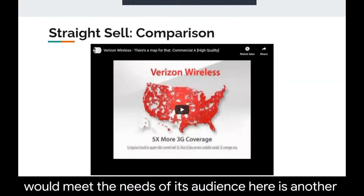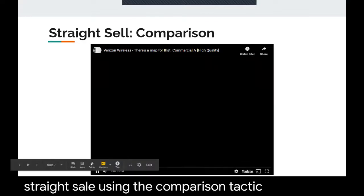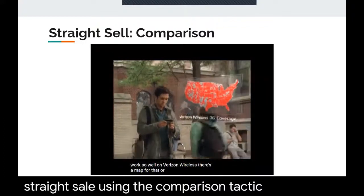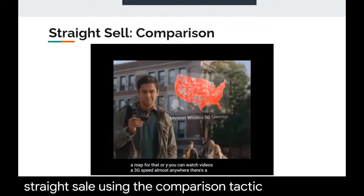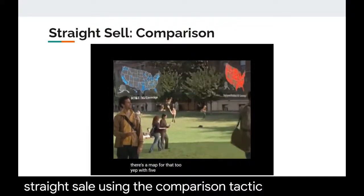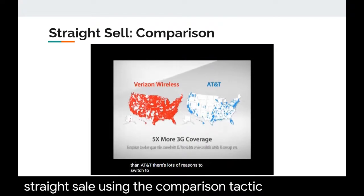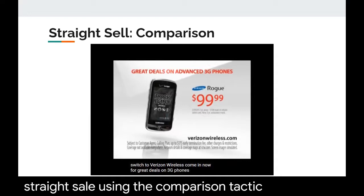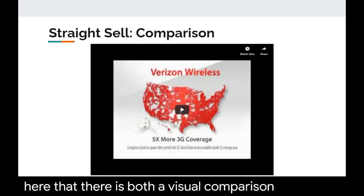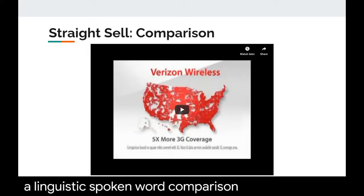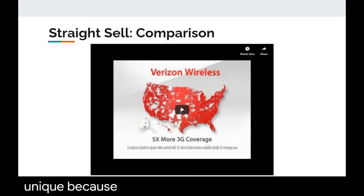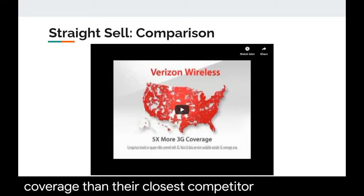Here is another straight sell using the comparison tactic — a Verizon commercial arguing that their service is unique because they have larger areas of 3G coverage than their closest competitor, AT&T. There is both a visual comparison and a linguistic spoken-word comparison: 'With five times more 3G coverage than AT&T, there are lots of reasons to switch to Verizon Wireless.' This makes it a straight sell.